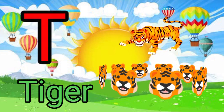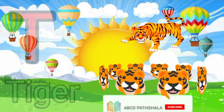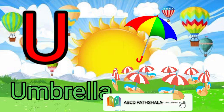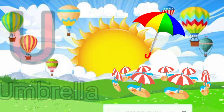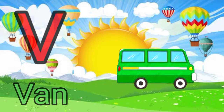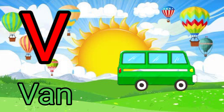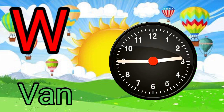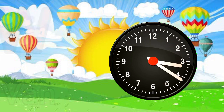E for telephone, U for umbrella, V for band, W for horse.